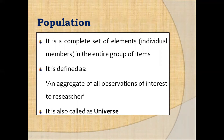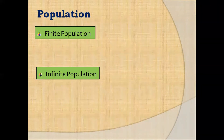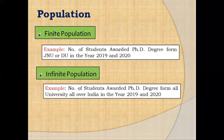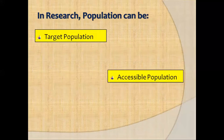Population can be of two types: finite population and infinite population. For example, the number of students who have been awarded a PhD degree from JNU or Delhi University in the year 2019 and 2020 will be finite. But if we consider the number of students awarded a PhD degree from all universities all over India in the same year, that will be an infinite population.